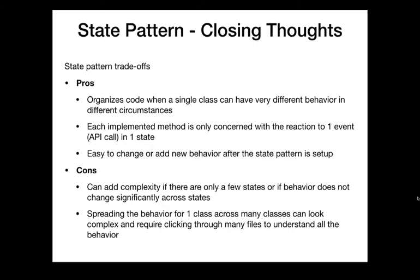The state pattern helps us organize our code and implement methods — each method becomes short, concise, and separated from the rest. We have separation of concerns or encapsulation: for this state, when this API method is called, what should the behavior be? We isolate that behavior for that state and that API call in a single method — completely isolated from the rest of the code. We can wrap our heads around that one method. Once we have the state diagram and state transitions planned, implementation becomes very easy.